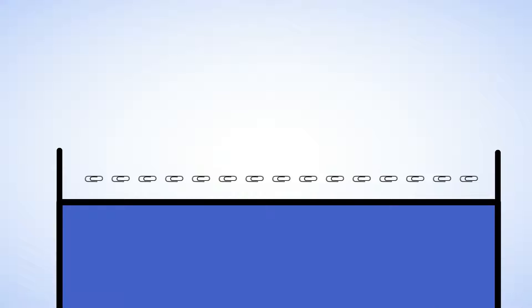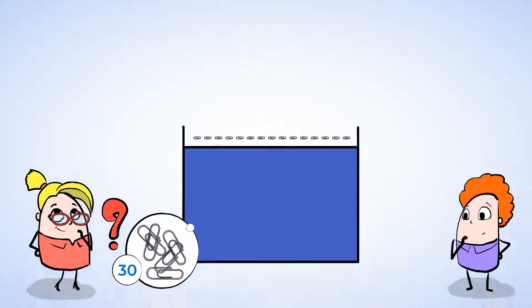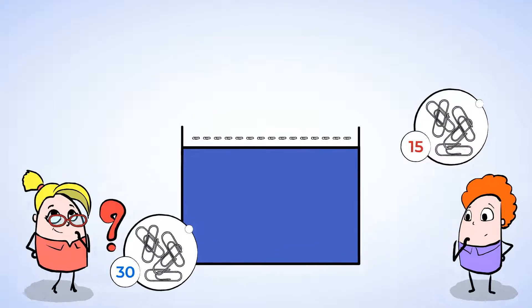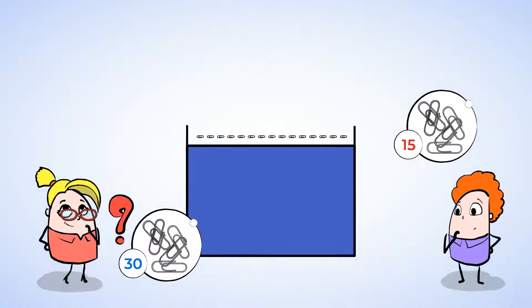Eric laid down 15 paper clips from one end of the desk to the other. So he says that the desk is 15 paper clips long. Hmm, do you agree with him? Look carefully. Aha! There are gaps between the paper clips, and that means that Eric didn't measure these parts of the desk, the parts between the paper clips.